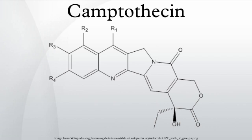Toxicity of CPT is primarily a result of conversion of single-strand breaks into double-strand breaks during the S phase, when the replication fork collides with the cleavage complexes formed by DNA and CPT.